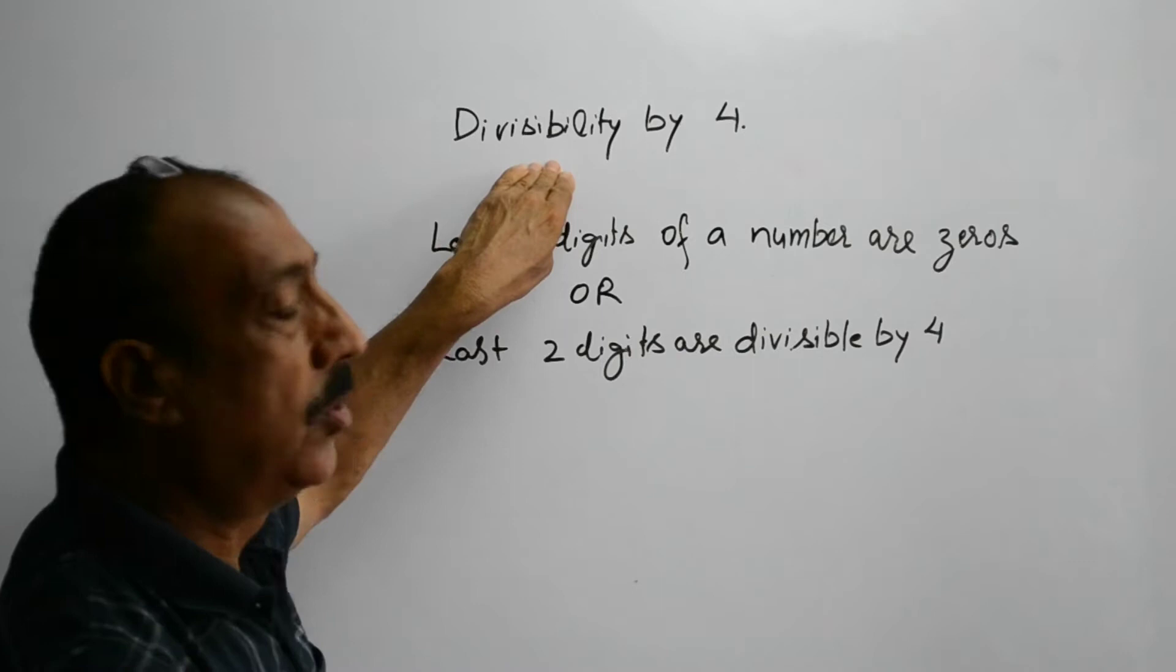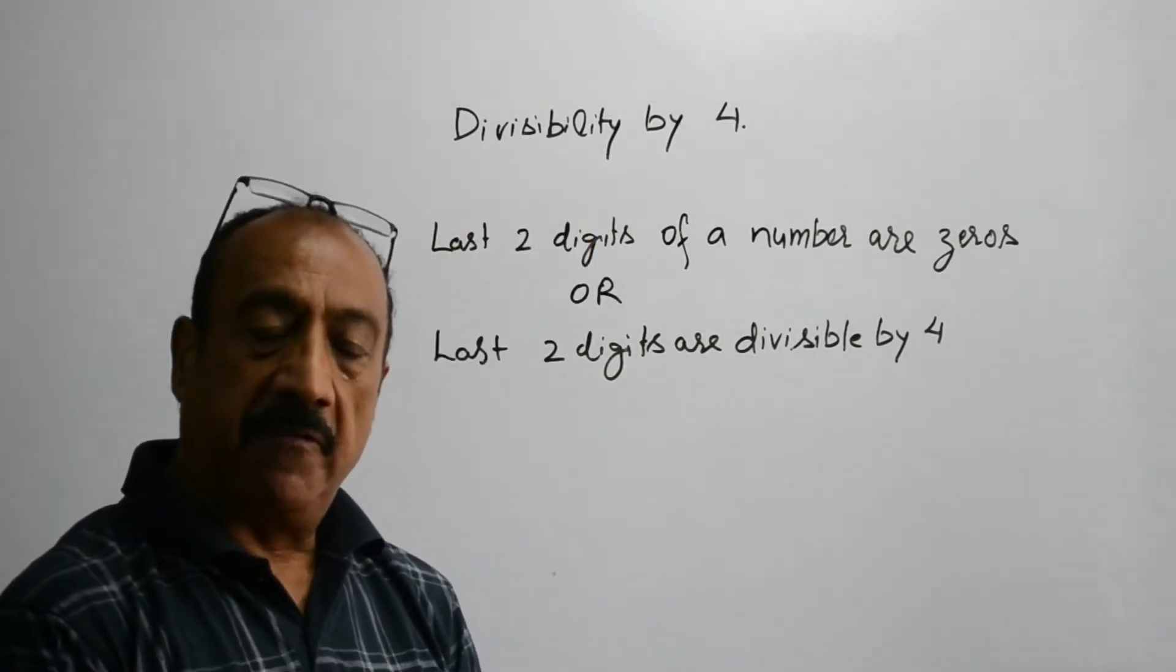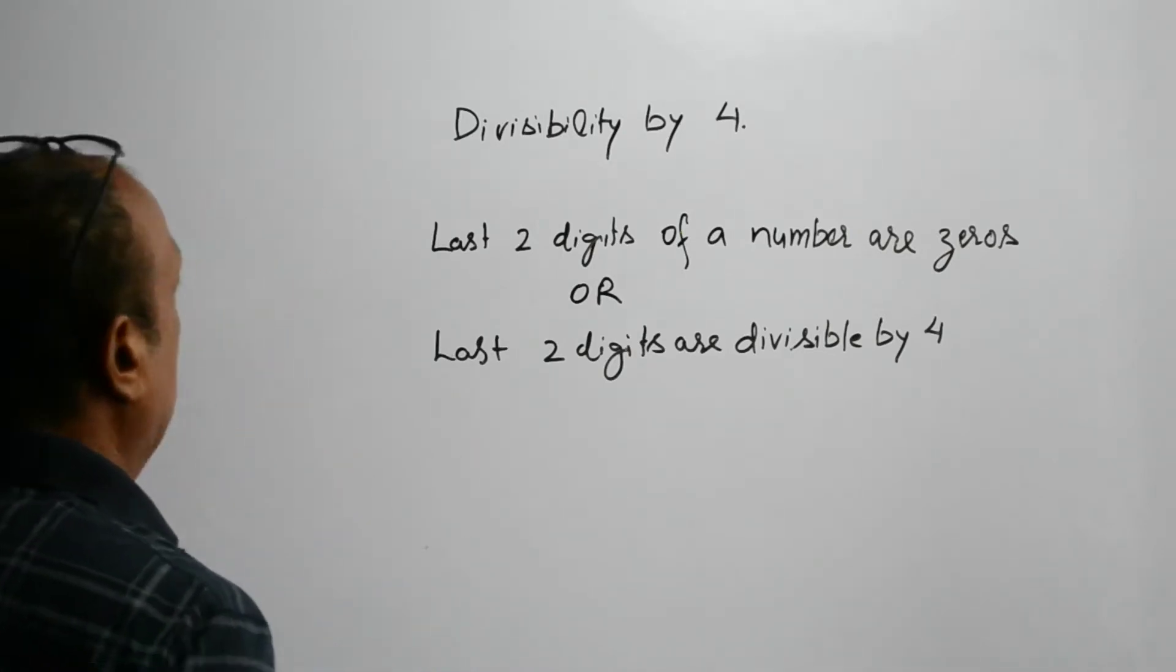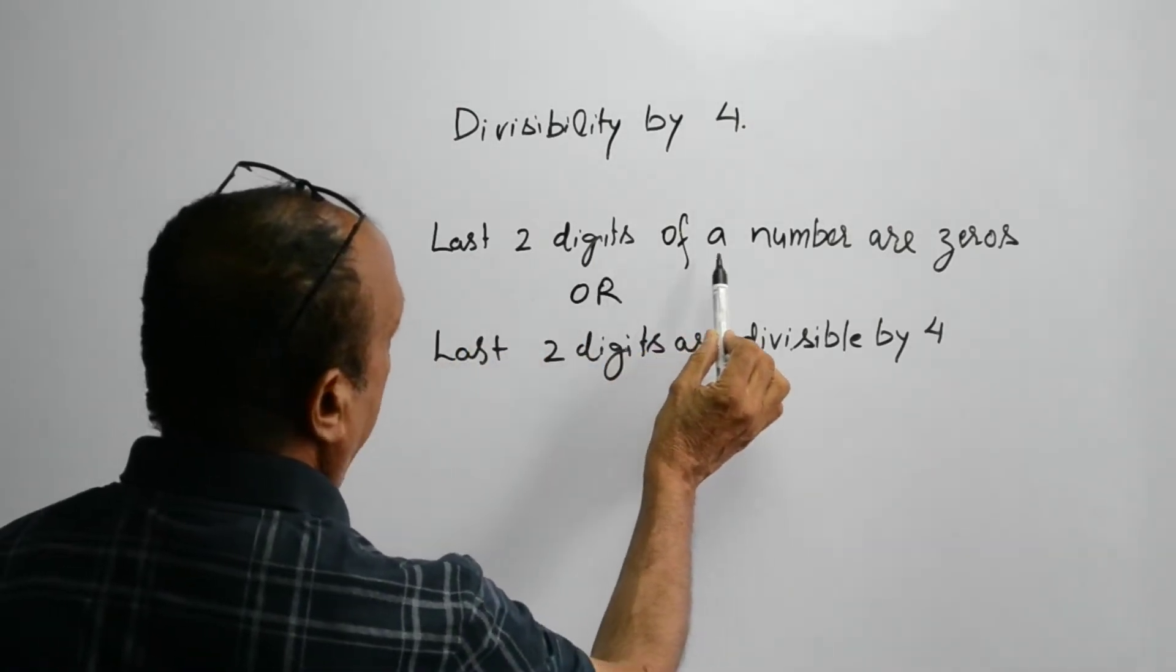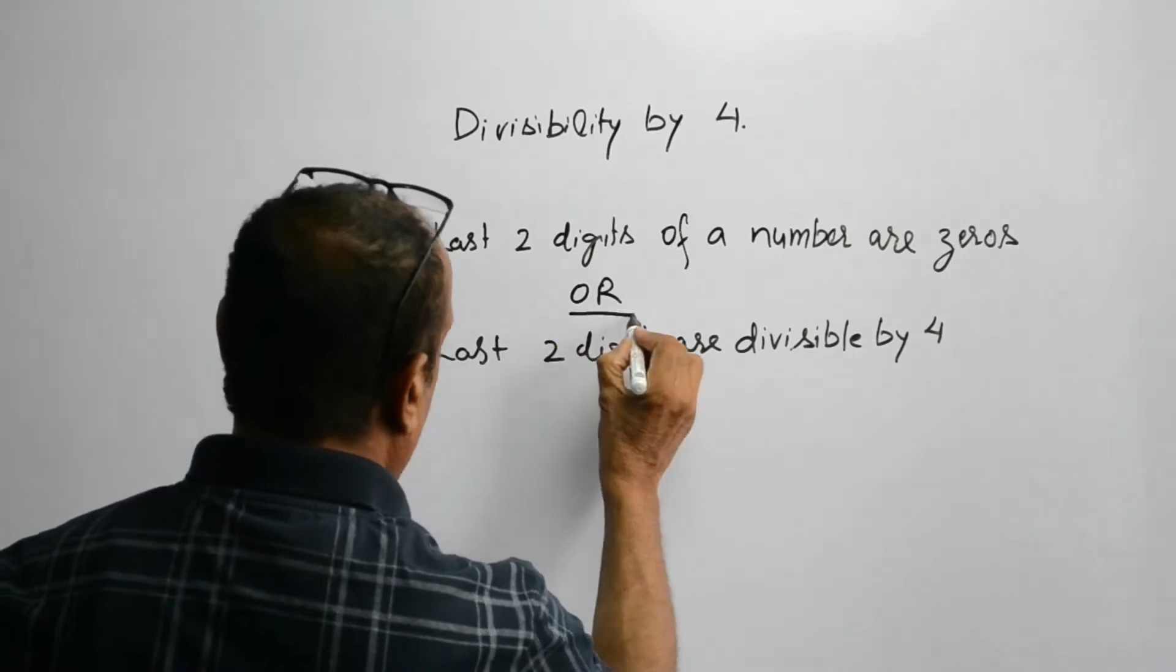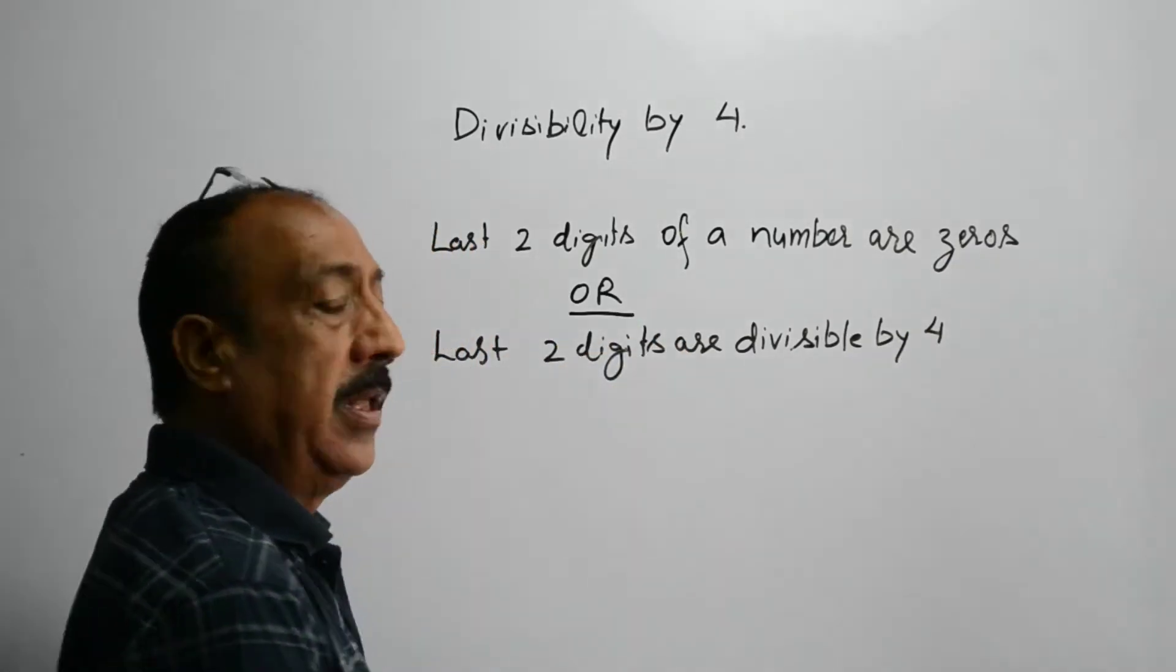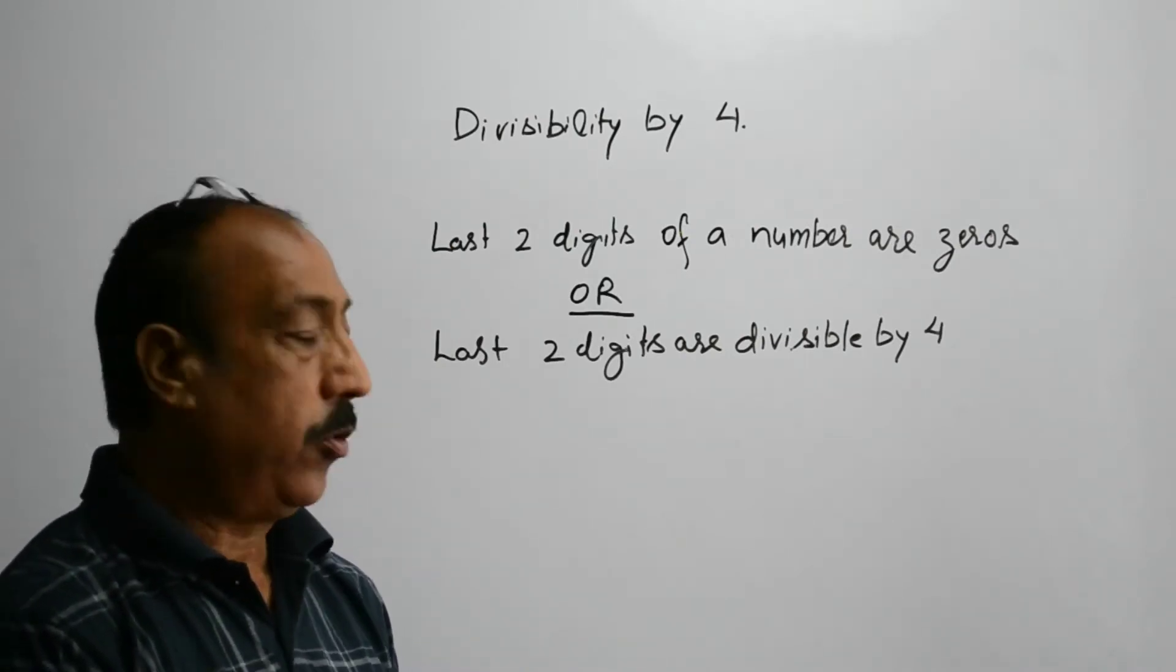With the help of this rule, we can do it faster without doing actual division. The divisibility rule says that if the last two digits of a number are zeros, or the last two digits are divisible by 4, then that number is divisible by 4.